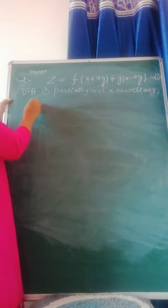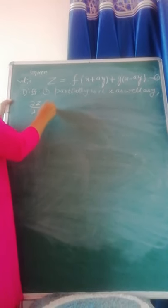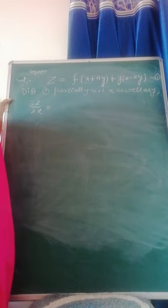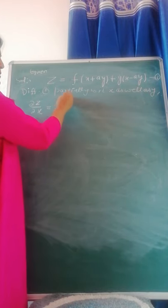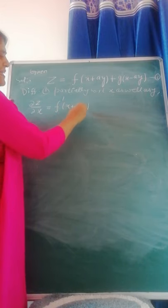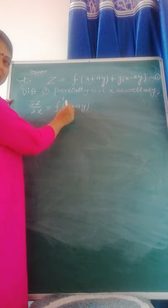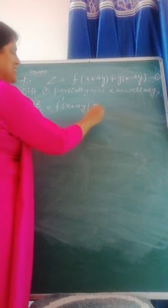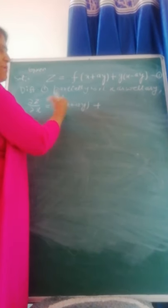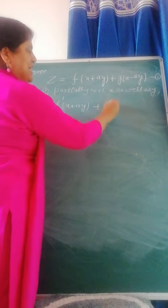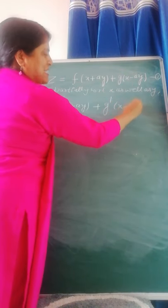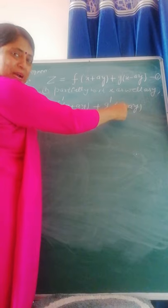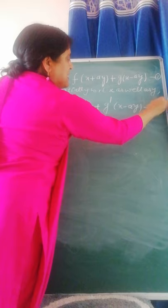Taking the partial derivative del z / del x: when you differentiate with respect to x, treat y as constant. So you get f'(x + ay) — the derivative of x is 1 and the derivative of ay is 0 — plus g'(x − ay), and the derivative of x is 1. Let this be equation 2.